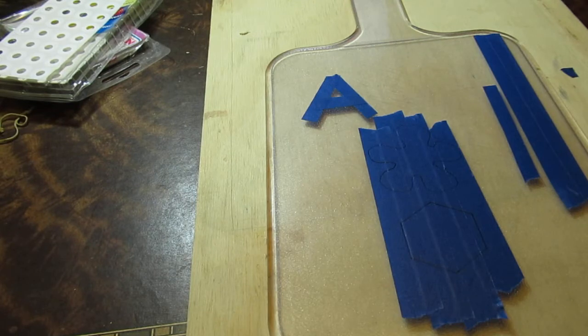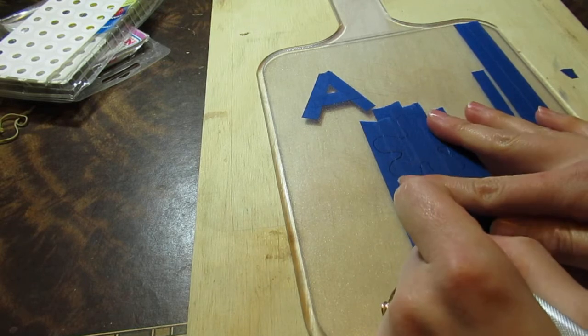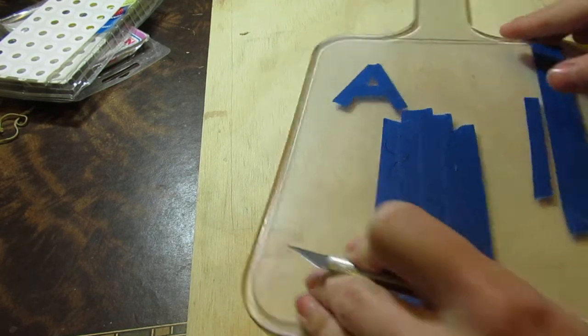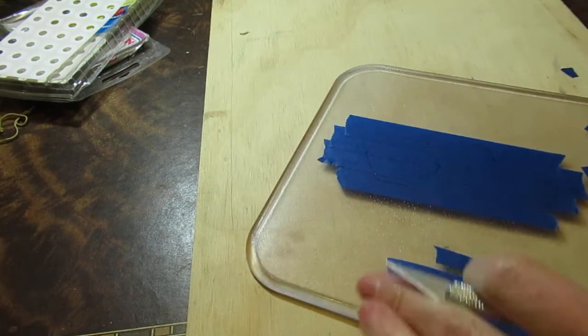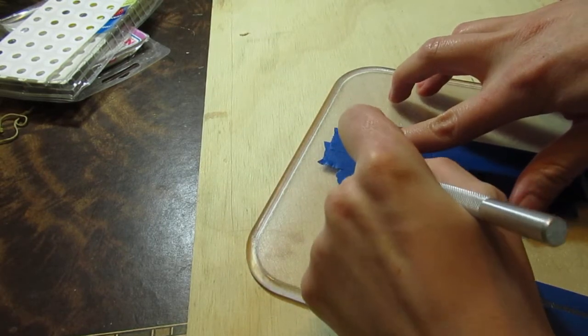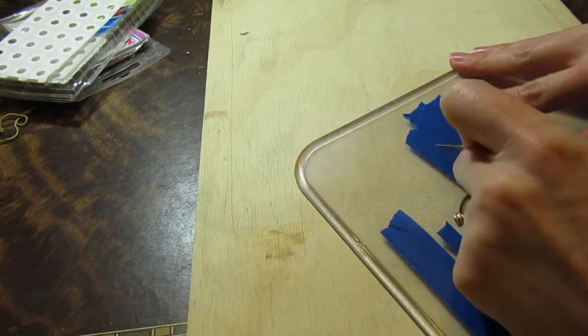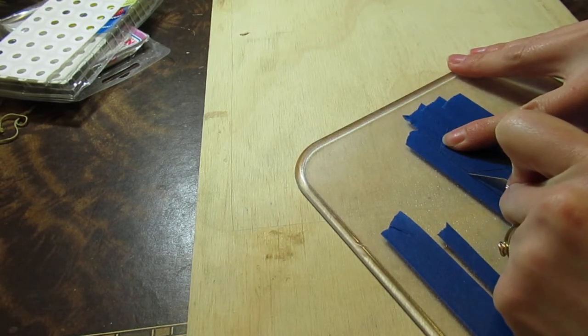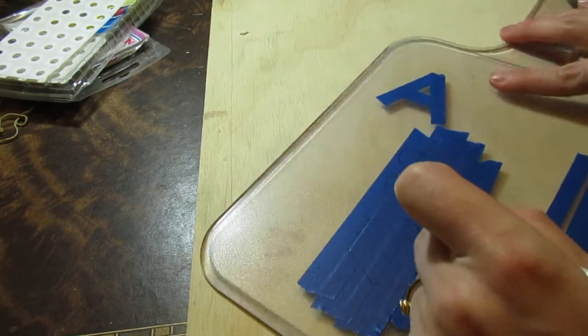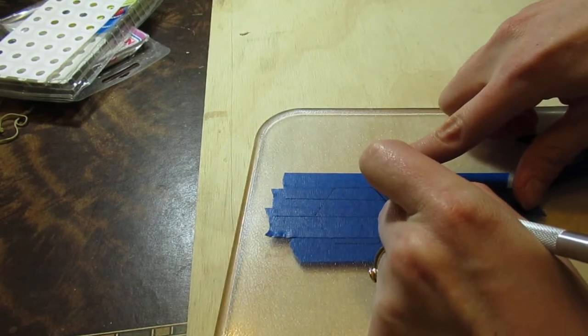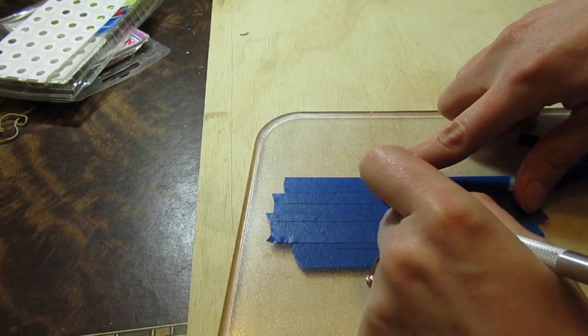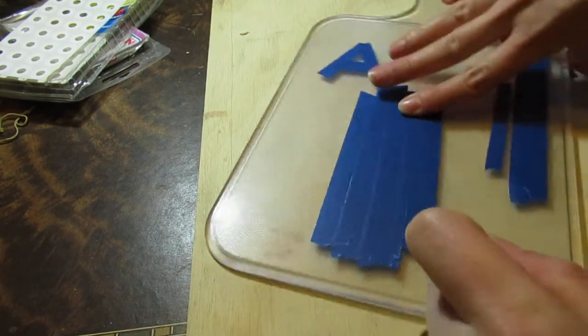Whatever shape you need, you can create it with this method. Then it's just a matter of slicing through your tape along the lines of the shape that you're creating. Be very careful with these sharp tools as you're working.